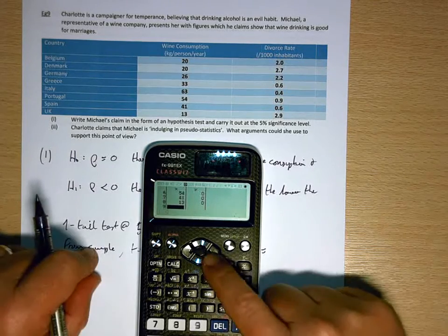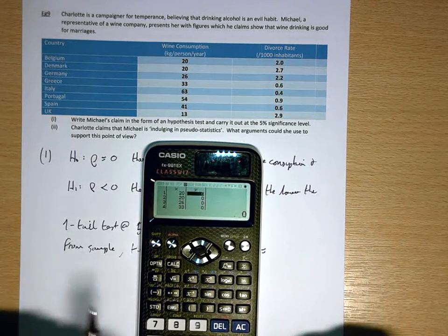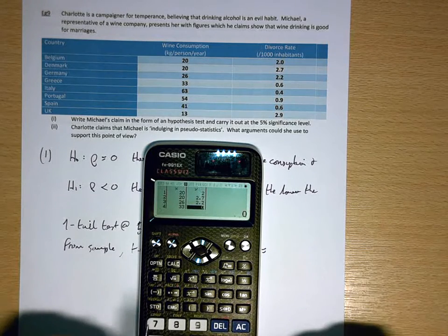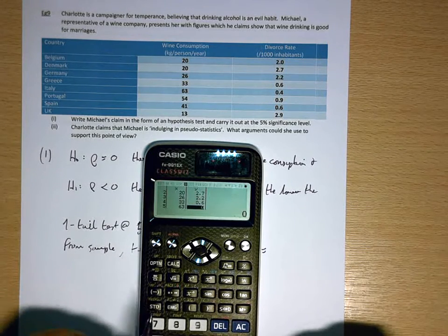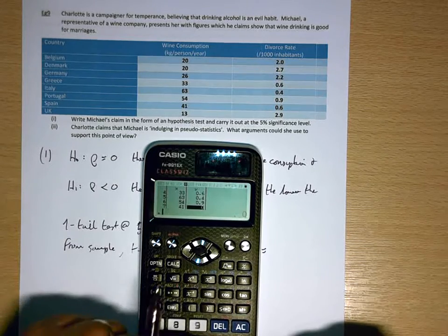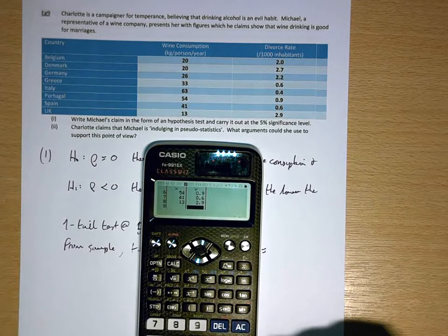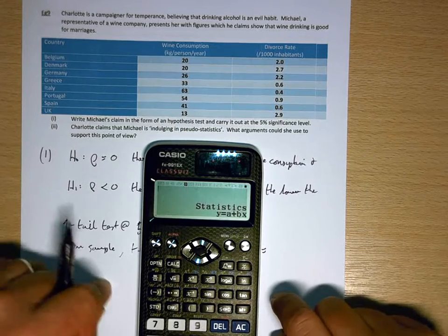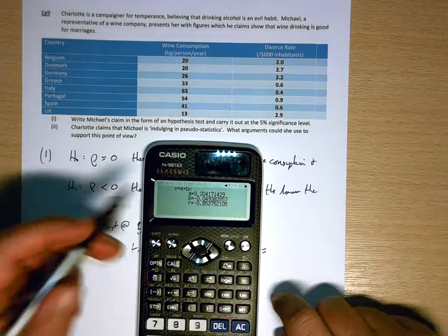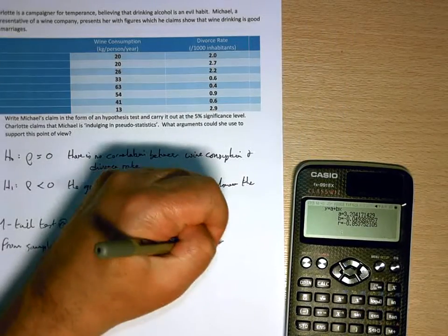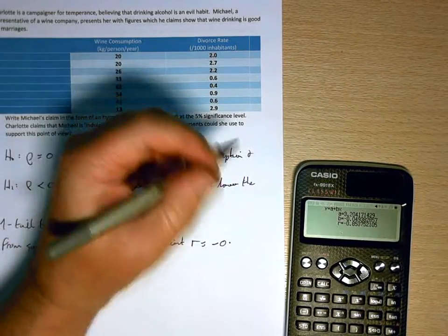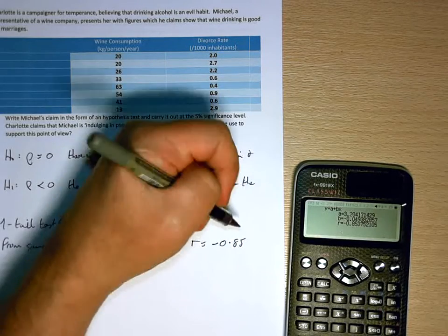13 enter, cross and down. 2, 2.7, 2.2, 0.6, 0.4, 0.9, 0.6, 2.9, AC, option 3, and we've got a negative 0.0... sorry, minus 0.854.